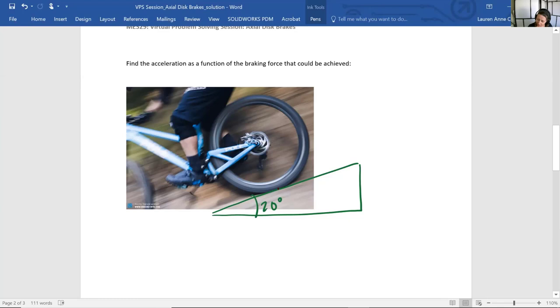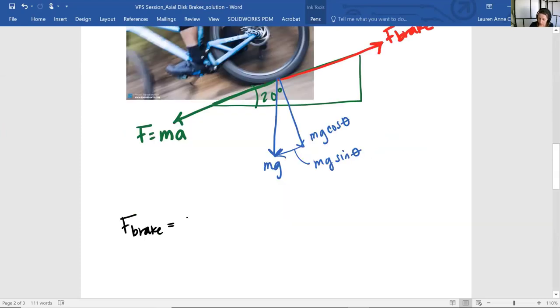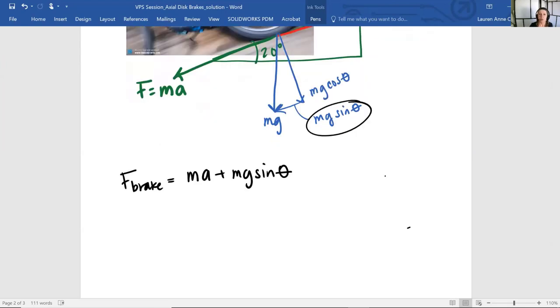We have a braking force that the rider - by the way, even though in the picture it looks like a guy rider, it's definitely a girl mountain biker - needs to slow down. We have mg, the force due to gravity straight down, with two components: mg cos(θ) and mg sin(θ). The force of the rider going down the hill equals mass times acceleration. The braking force essentially has to overcome ma + mg sin(θ). We're solving for acceleration, which is our only unknown.